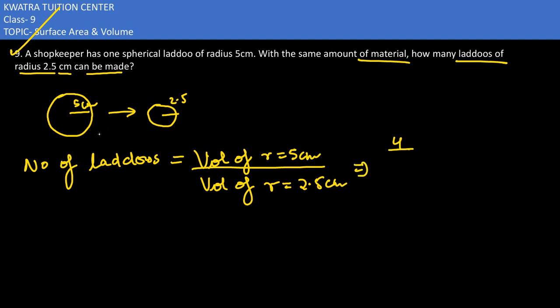So it would be 4 by 3 pi r cube. And why did we utilize this formula? Because this is in the shape of sphere. Laddus are in the shape of sphere.